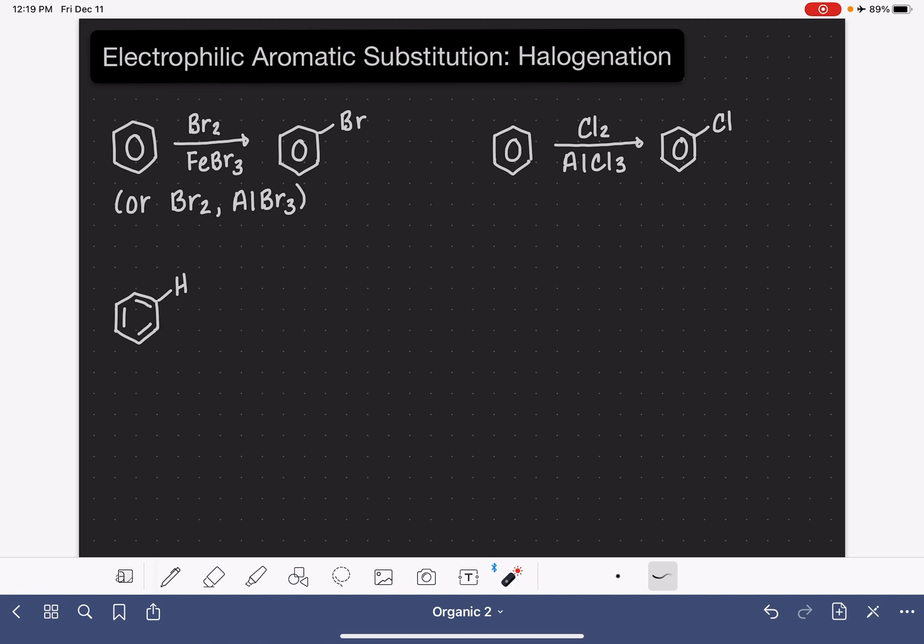We can use either bromine or chlorine to halogenate the benzene ring. The reagents that we use are Br2 with the catalyst FeBr3 or AlBr3, or if we want to chlorinate, Cl2 with the catalyst AlCl3.